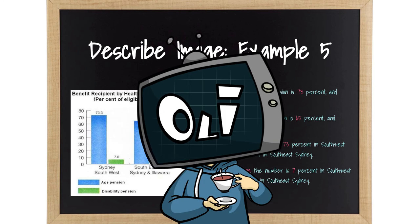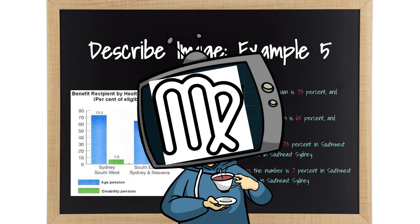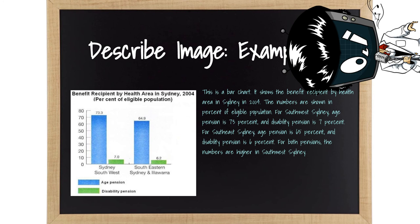Here is the simple answer, unlike the perfectionistic Virgo that I am. This is a bar chart. It shows the benefit recipient by health area in Sydney in 2004. The numbers are shown in percent of eligible population. For Southwest Sydney, age pension is 73%, and disability pension is 7%. For Southeast Sydney, age pension is 65%, and disability pension is 6%. For both pensions, the numbers are higher in Southwest Sydney.